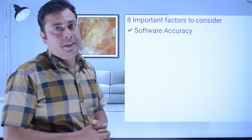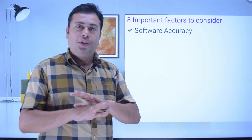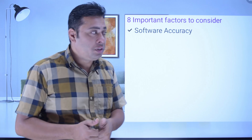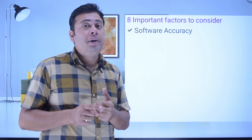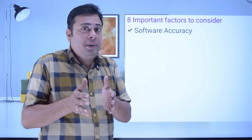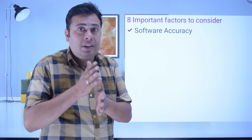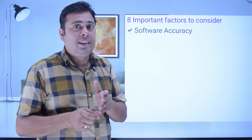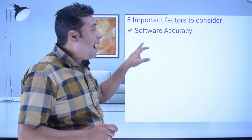The first factor is report accuracy. If you don't have report accuracy, whatever you do, you cannot grow in the business. All your success and company growth depends on the report accuracy. Report accuracy comes completely from research — a company must have properly researched and validated all the reports and then built the software. Only then will the report be accurate.